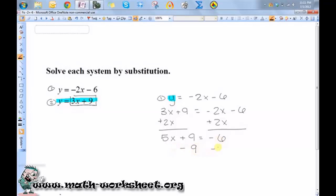Then subtract 9 from both sides. So I'll have 5x is equal to negative 15, and then divide both sides by 5. So I get x is equal to negative 3.